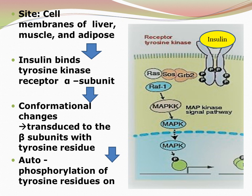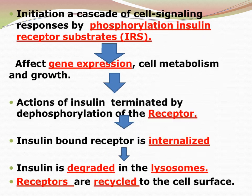You can see here the cascade of reactions — a chain of cell signaling responses initiated by phosphorylating insulin receptor substrates, which will ultimately affect gene expression. Once that has been done, the actions of insulin need to be terminated. To terminate it, we dephosphorylate — we remove the phosphate group from the tyrosine residues.